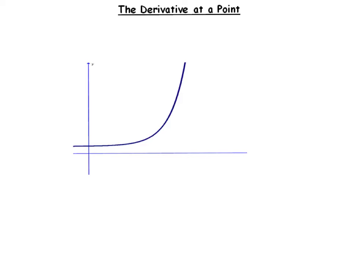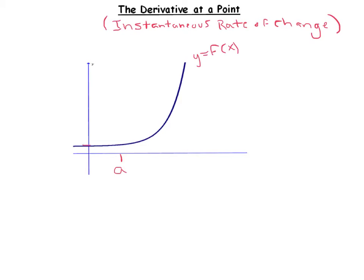Now we're going to look at instantaneous rate of change — also called the derivative at a point. I'm going to redraw a similar diagram to the one used for average rate of change. I'll call this point a, and this function f of x, y equals f of x. If that's a, then this y coordinate is f of a. Now, I'm not going to label my other x value b — I'm going to label it x, as a variable.